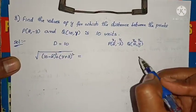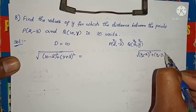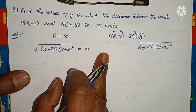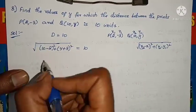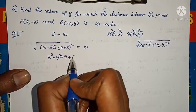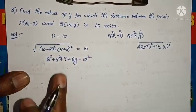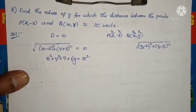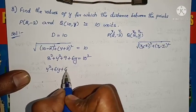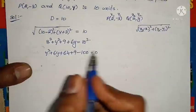I have directly applied the formula and substituted the values. Here there is a root on the left side. If I send the root to the other side it becomes a square — 10 squared equals 100. So: (10 minus 2) squared plus (y plus 3) whole square equals 100. That is 8 squared which is 64, plus (y plus 3) whole square. Expanding: y squared plus 6y plus 9 plus 64 equals 100. Sending 100 to this side: minus 100 equals 0.